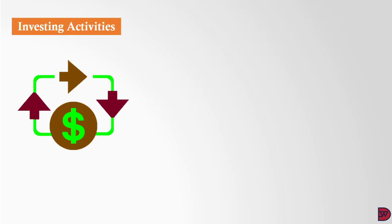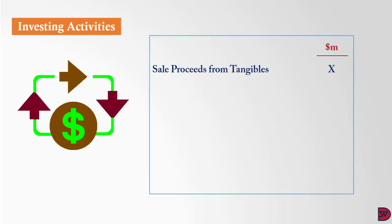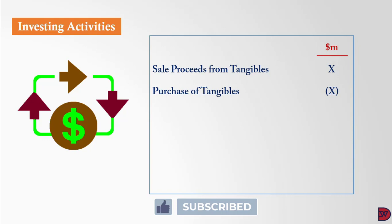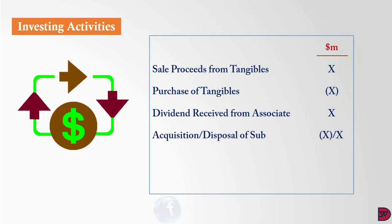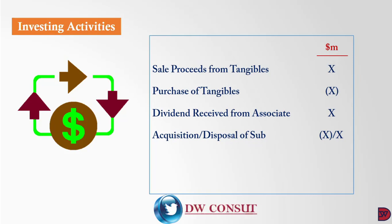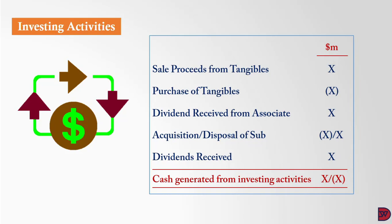Moving on to investing activities, we want to capture the group's inflow or outflow related to investments in assets or other entities. We start with proceeds from selling non-current assets — this brings in money, so it is a plus. Any purchases of non-current assets lead to money flowing out, so they are subtracted. We also add the dividend received from associates. Any acquisition of a subsidiary is subtracted as net cash paid; the net amount received from selling a subsidiary is added. We also add any other dividend received from investments.